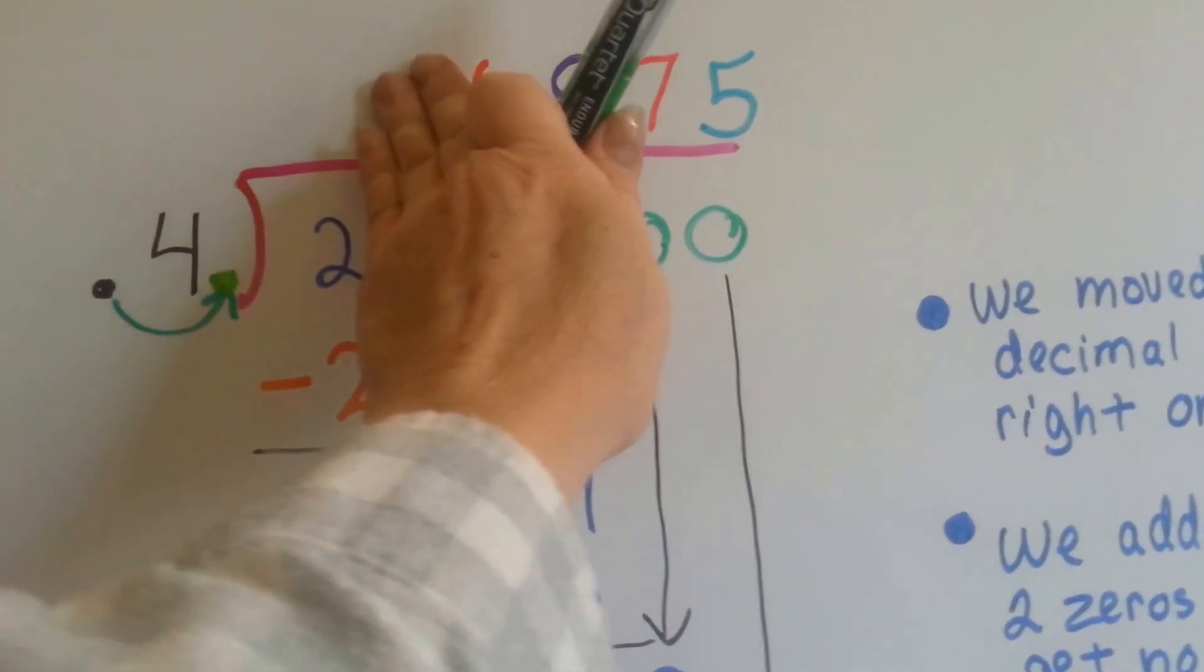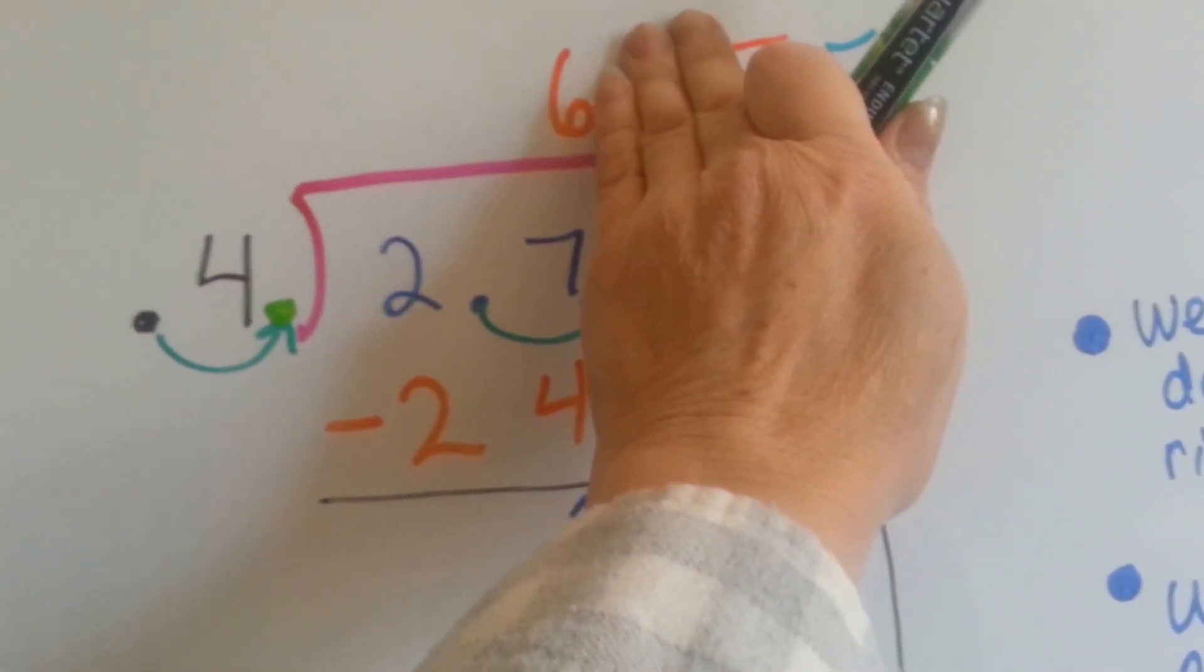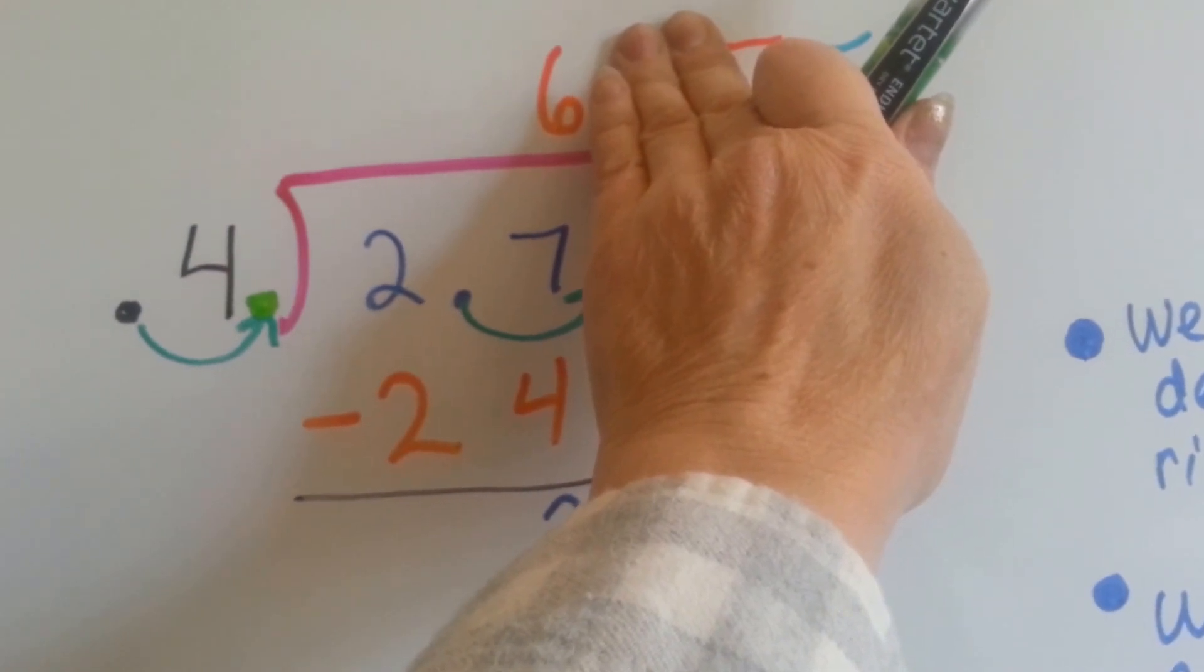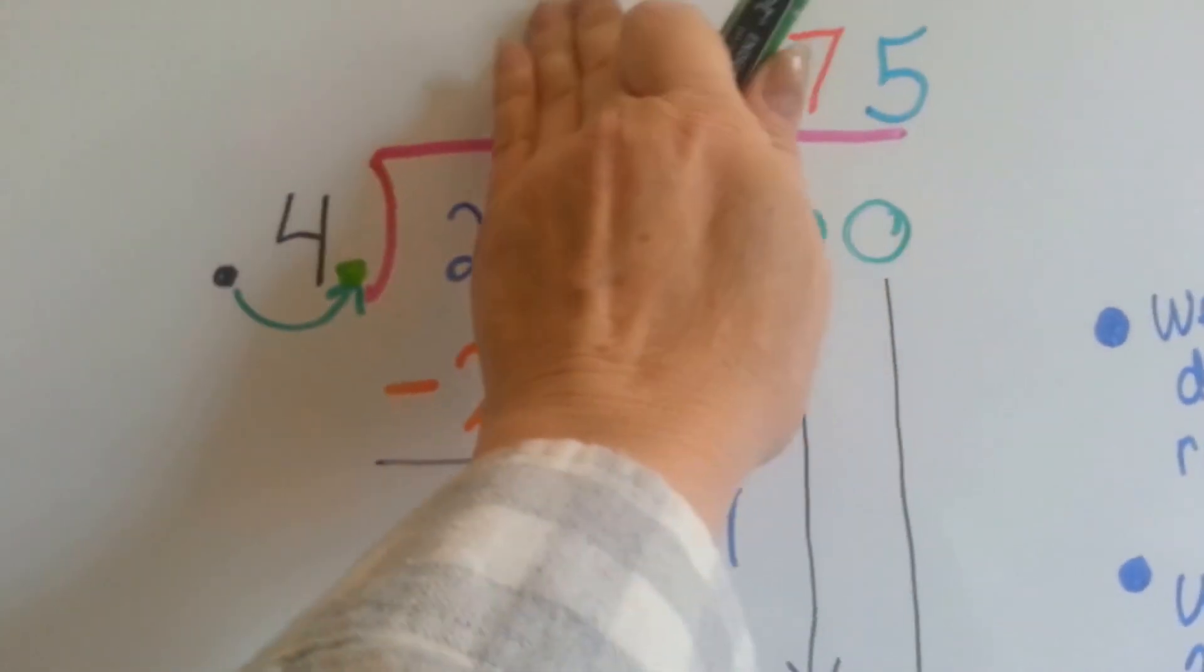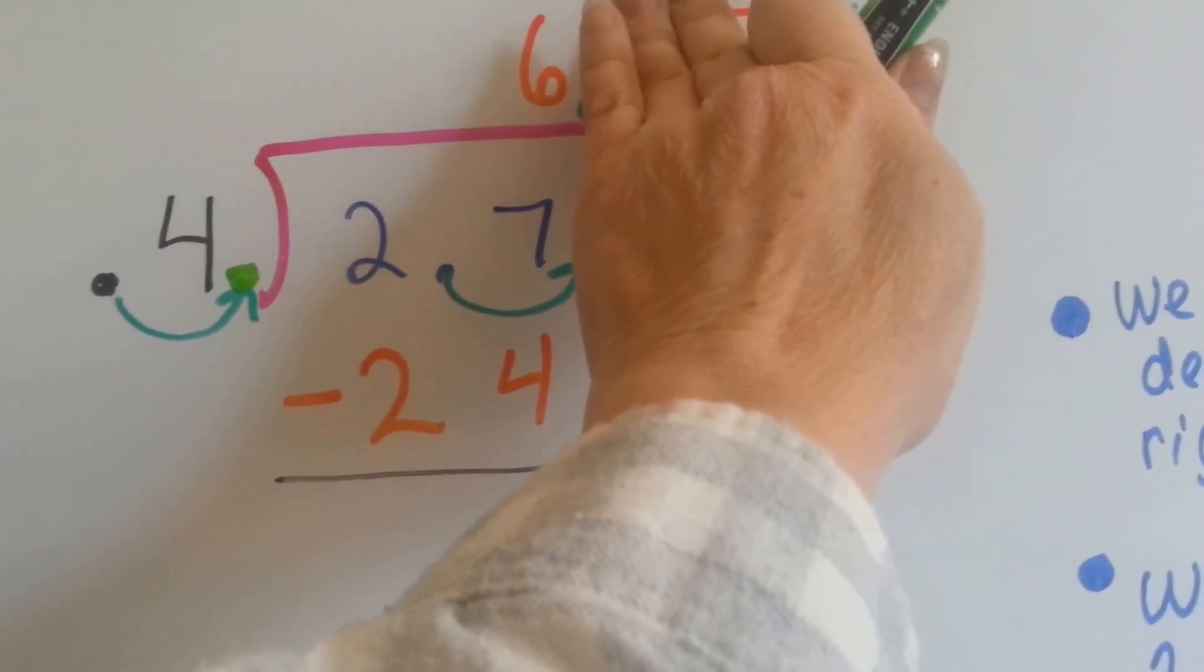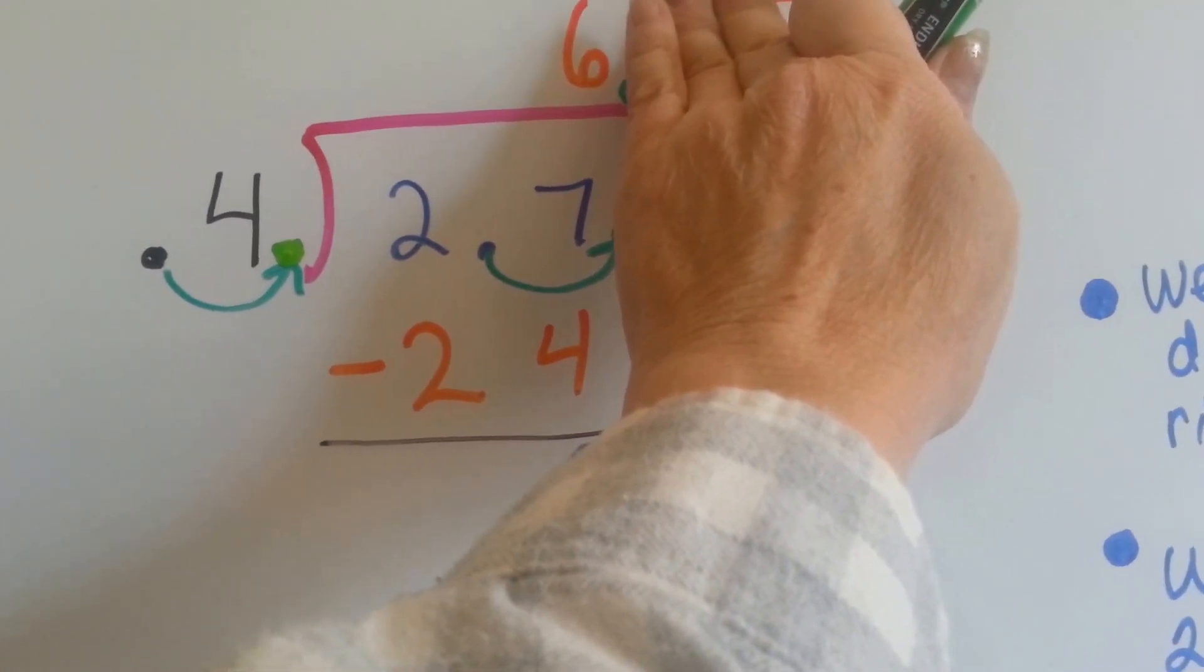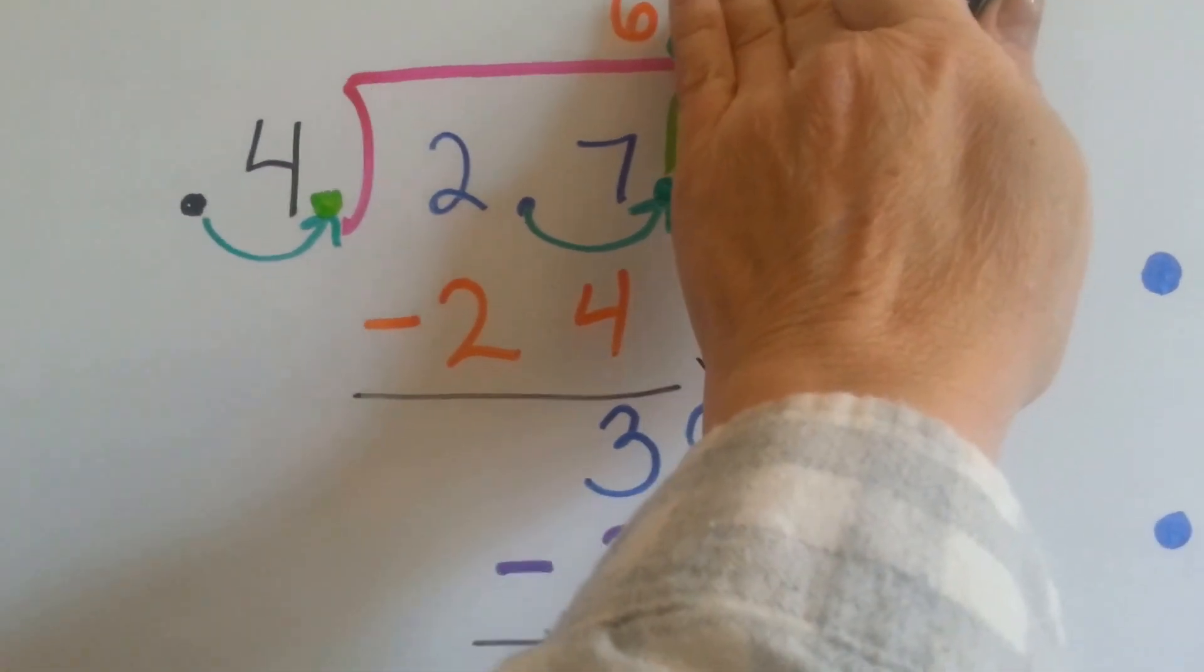can 4 fit into 2? No, it can't. Can 4 fit into 27? Yes. How many times? 6, because 4 times 6 is 24. So we put our 6 above the 7, because we didn't put it into the 2, we put it into the 27, so it goes above the 1's place for the 27. And then we do our multiplication of 4 times 6, which is 24, and we write it down below, and then we subtract, and we get 3.